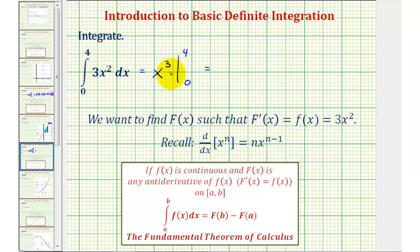So notice when x is four, or for big F of four, we'd have four cubed, or four to the third, minus when x is zero, or big F of zero, we'd have zero to the third, which would give us 64 minus zero, or just 64.